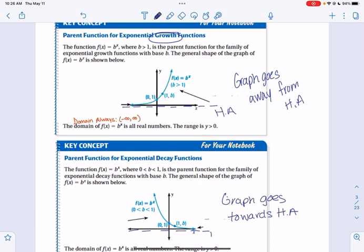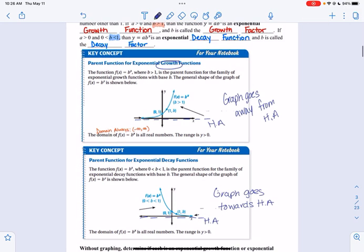For these graphs, they're always going to be continuous left to right. So the domain is always going to be negative to positive infinity, and the range will be based off your horizontal asymptote.